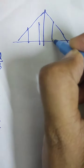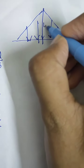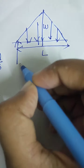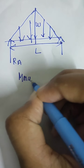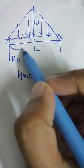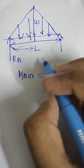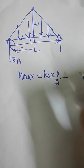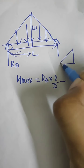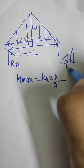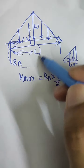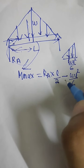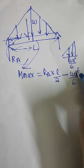Next, consider a simply supported beam with a UVL load of intensity w over length l, with reactions Ra and Rb. Since the load is symmetric, Ra equals Rb. The maximum bending moment is Ra × l/2 minus the UVL moment contribution. We already know the UVL maximum moment is wl²/6, so: M_max = Ra × l/2 − wl²/6. This involves clockwise and anti-clockwise moment components.